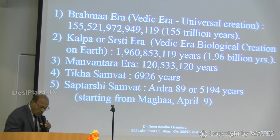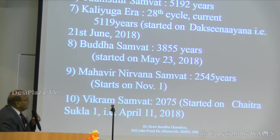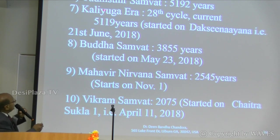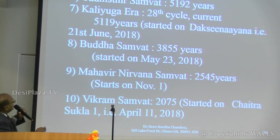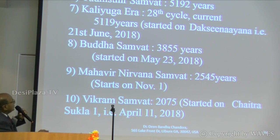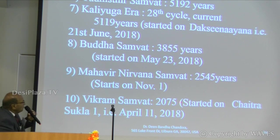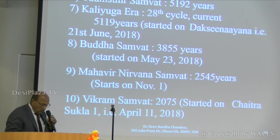There are other eras in India as well. Yudhishthira Sammat: 5,092. Kaliyuga is in its 28th cycle — 5,119 years — which started on June 21st when Dakshinayan started. Buddha Sammat: 3,855. Mahavir Nirvana Sammat and Vikram Sammat are also listed. There are further eras: Shak Sammat, Kachuri, Vallabhi and others.